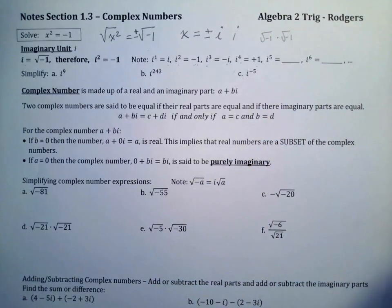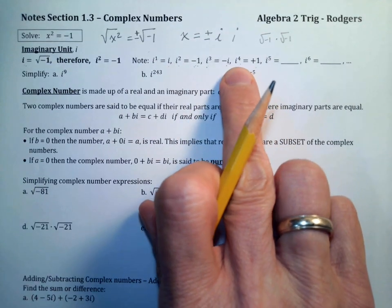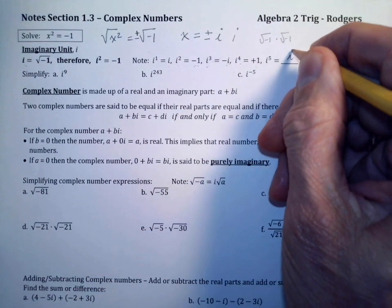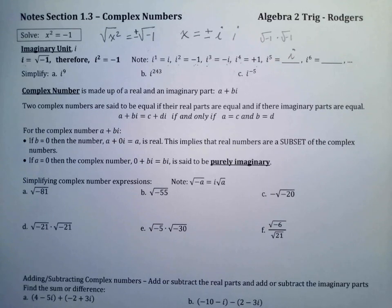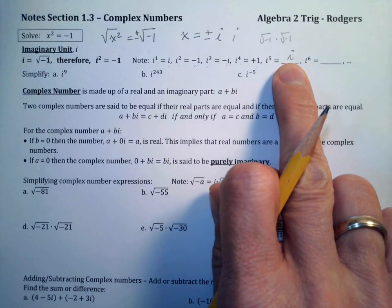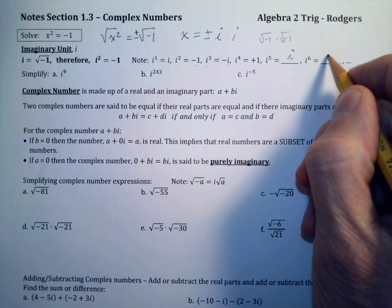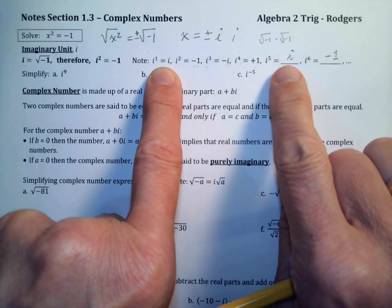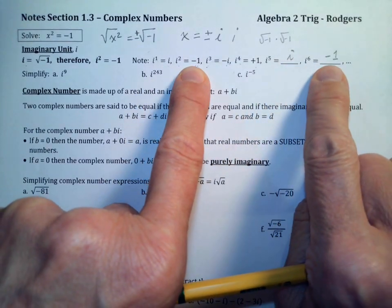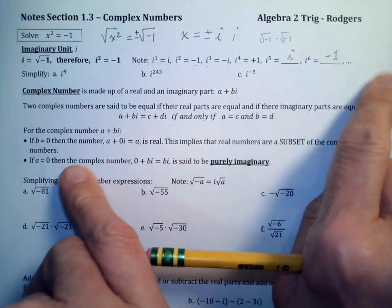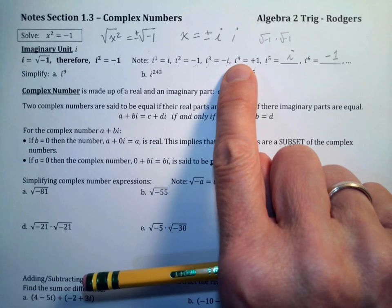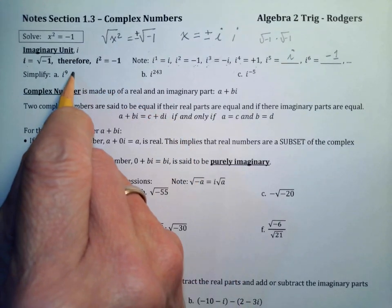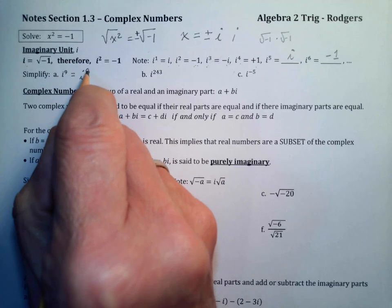Think about what i⁵ and i⁶ would be. i⁵ = i⁴ × i = 1 × i = i, which is just i¹. And i⁶ = i⁵ × i = i × i = i², which equals -1. You can see the cycle is starting over again: i¹, i², i³, i⁴ — then it repeats every four exponents.